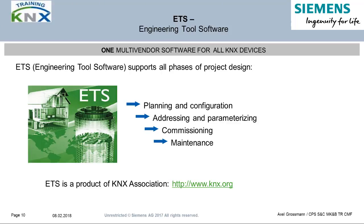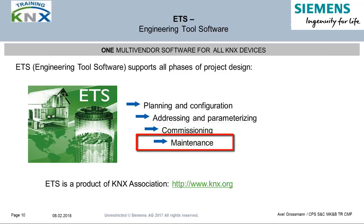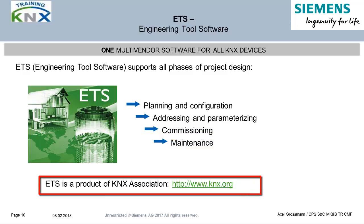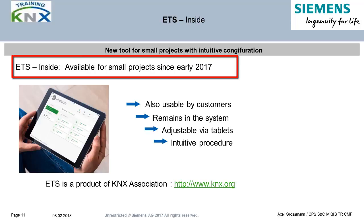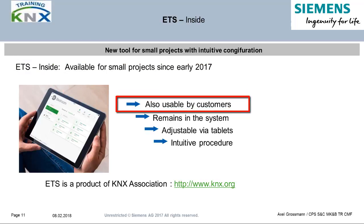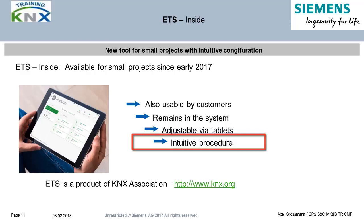An essential and unique feature of KNX is the software tool ETS — Engineering Tool Software — shared by all manufacturers. This tool supports all phases of a KNX project, starting with planning, configuration of addressing, parameterization, commissioning, and finally maintenance during normal plant operation. The ETS is a manufacturer-independent tool developed and marketed by the KNX Association. Since the beginning of 2017, there is an additional development: the ETS Insight, which enables simple configuration that can be further processed by the end customer after preparation by an installer. For the first time, a KNX project can be configured with a tablet, making it especially suitable for small projects finalized quickly through an intuitive procedure.